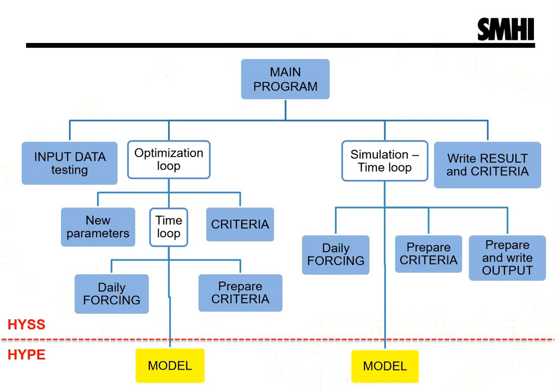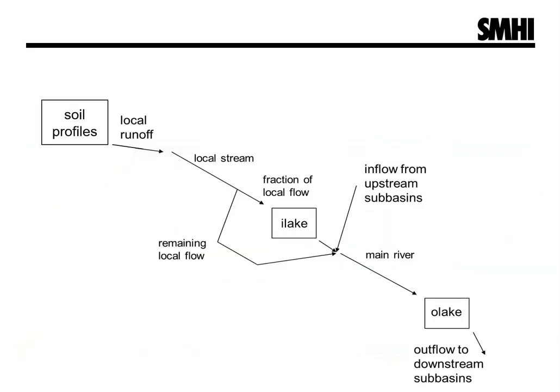The calculation order for the HYPE model is basically based on the water flow path. I will therefore first describe the water routing within the model. This is a simplified picture — some flow paths have been excluded.